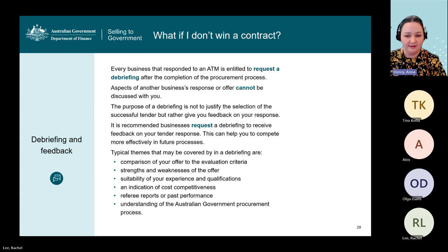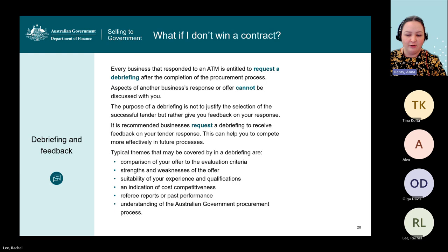If you don't win a contract, every business that responds to an ATM is entitled to request a debriefing after the completion of the procurement process. Aspects of another business's response cannot be discussed with you in a debriefing. The purpose is not to justify the selection of the successful tenderer but to give you feedback on your individual response. We recommend businesses request a debriefing to receive feedback on your tender response, as this can help you to compete more effectively in future processes. Typical themes covered in a debriefing include comparison of your offer to the evaluation criteria, strengths and weaknesses of your offer, suitability of your experience and qualifications, an indication of cost competitiveness, referee reports or past performance, and understanding of the Australian Government procurement process.